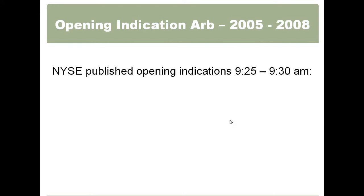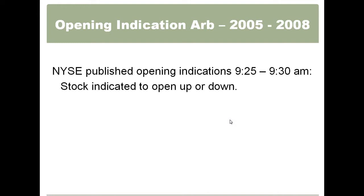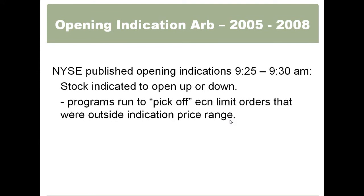Opening indication prices — years ago, NYSE stocks would publish an opening indication price. If the stock closed at $25 and was going to open up, they'd publish 25 to 25.50; if going down, 24.50 to 25. That was a lot of information. I actually had my own algorithm running that would pick off any ECN orders or pre-market orders that were sitting outside of range. If an opening indication was priced 25 to 25.50 and I could buy the stock at 24.95 in the pre-market, my algorithm would do that and then try to sell into the opening price. It didn't always work, but for the most part it usually made money. That doesn't work anymore either.